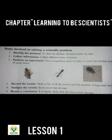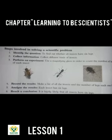These are the six steps involved in solving a scientific problem. The first step is to identify the question. For example, we have to identify the question: to find out whether all insects have six legs.